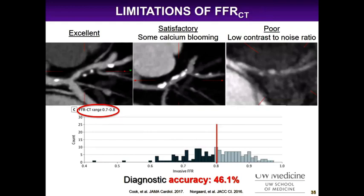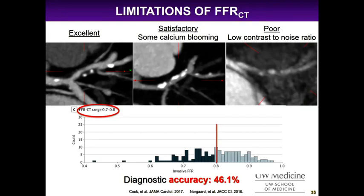These images show the limitations of FFR CT. In a good image you can see the lumen clearly with some plaque, easy to analyze. With calcium blooming it's a little more difficult but vendors can still perform FFR CT analysis. But with very low contrast-to-noise ratio, the company would not be able to complete the exam — about 10–20% of cardiac CTAs sent to HeartFlow cannot be analyzed. The gray zone of FFR CT values from 0.7 to 0.8 shows diagnostic accuracy of only 46%, with nearly equal numbers of truly abnormal versus normal invasive FFRs in that range.